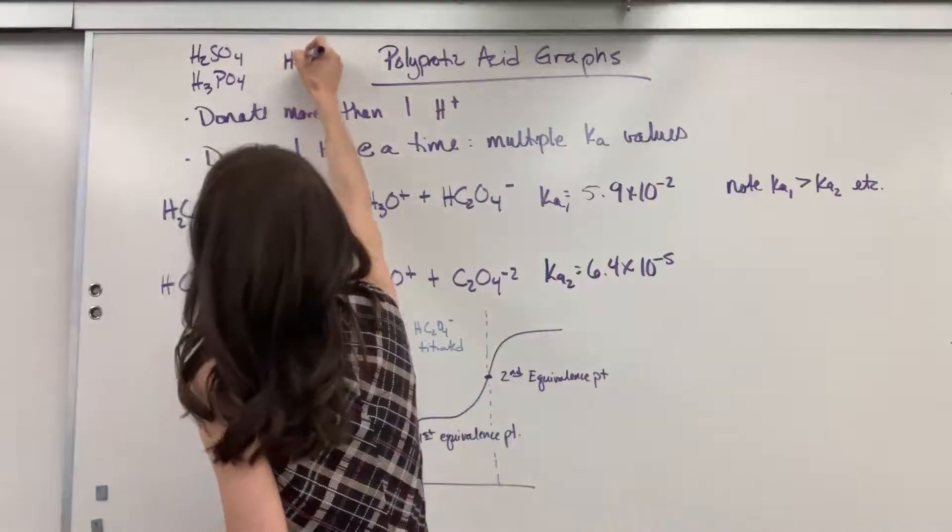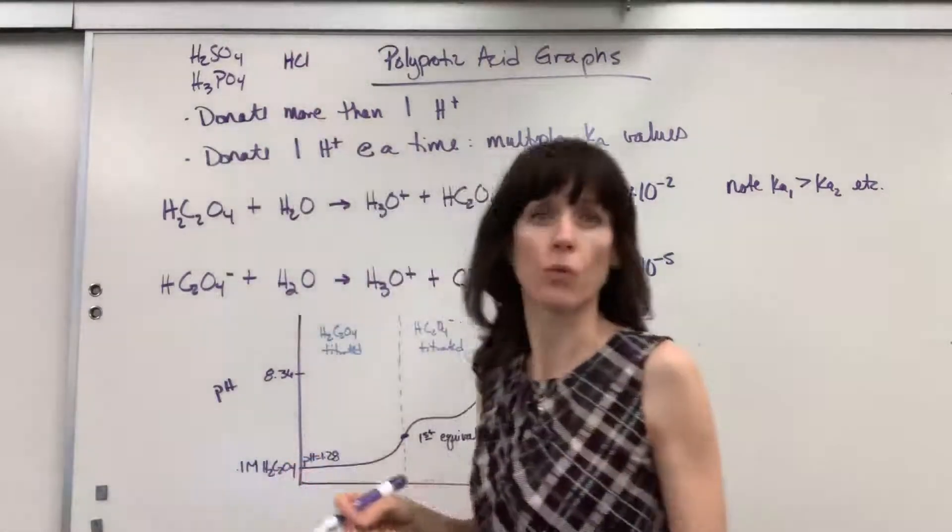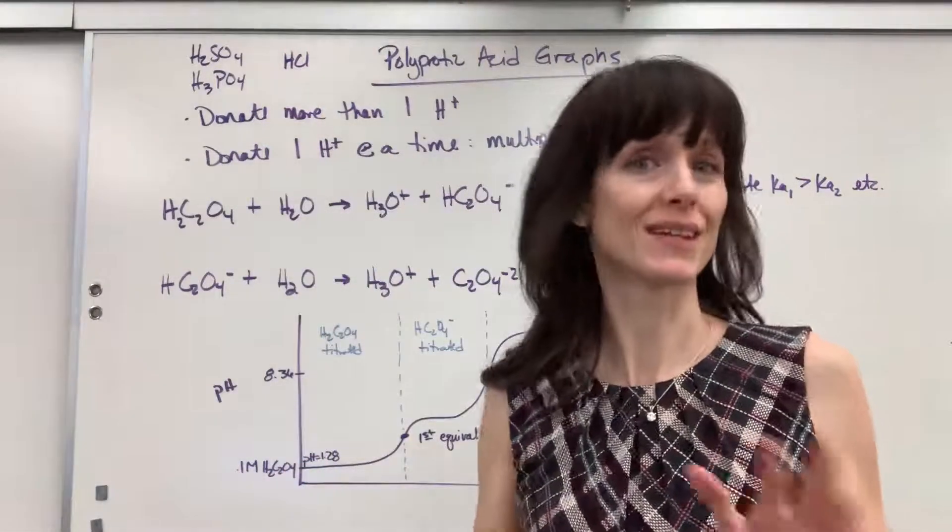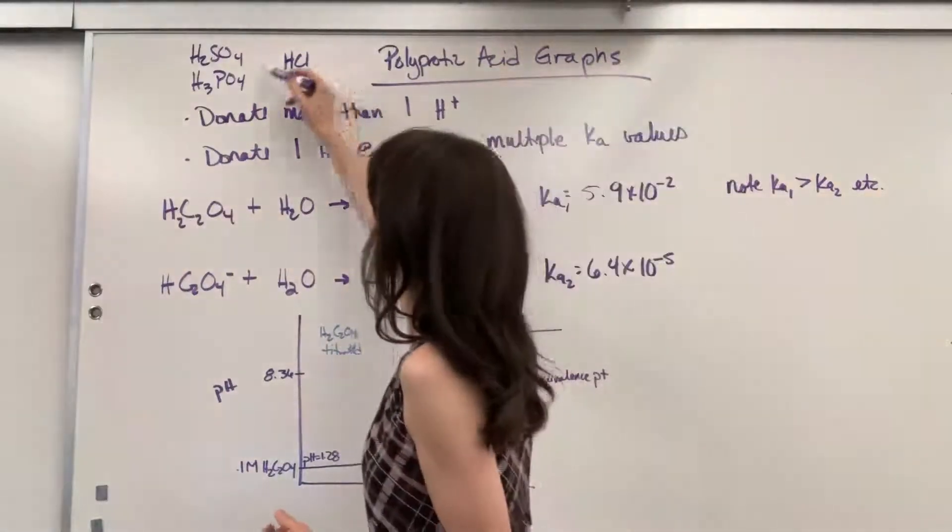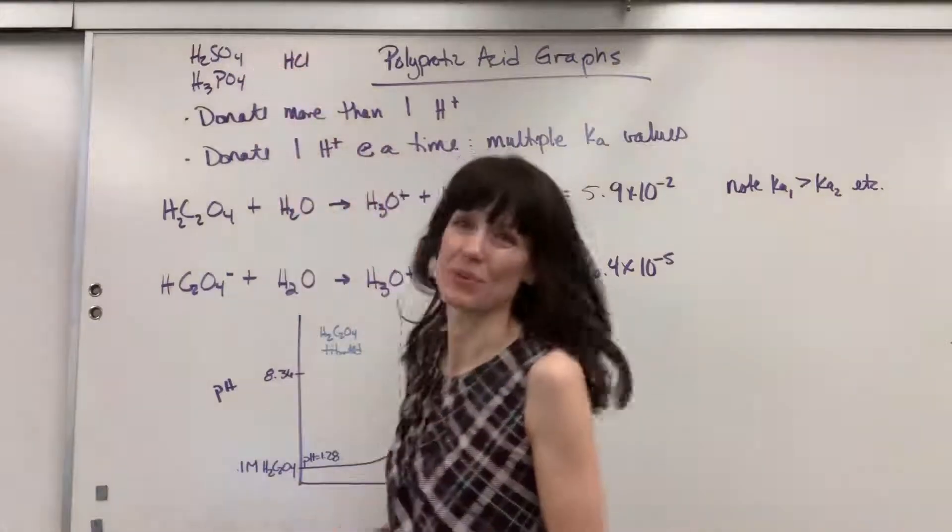In contrast, if I have just like an HCl, that's monoprotic, one hydrogen, and that's not considered a polyprotic, meaning many hydrogens. So this is monoprotic, these are both polyprotic, diprotic and triprotic.